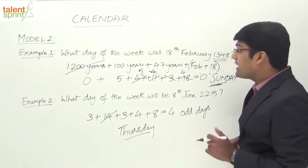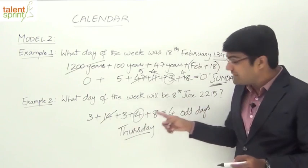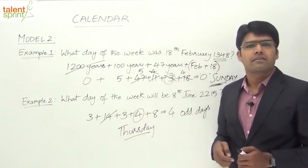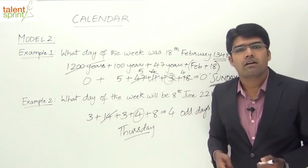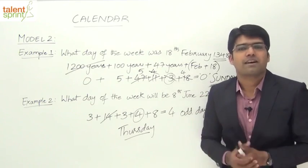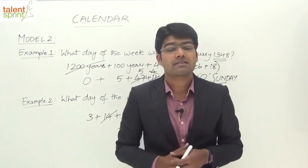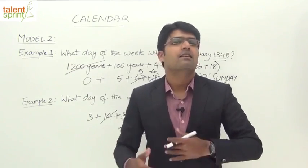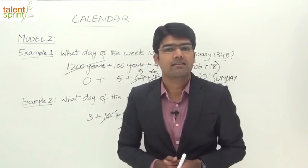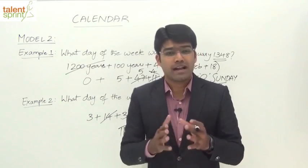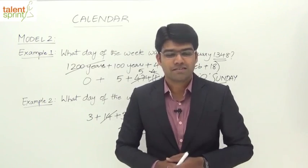If you remember the month codes — 3 for February and 4 for June — the calculation becomes very simple. The remaining steps are easy to remember; only the month codes need to be learned by heart. Learn all the month codes discussed in the introduction so you can get answers much faster. Practice well on the concept of odd days to solve the different types of calendar questions. All the best — see you in the next session!